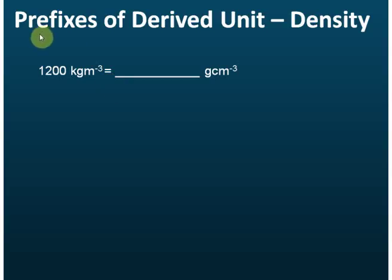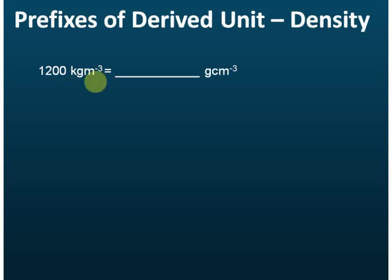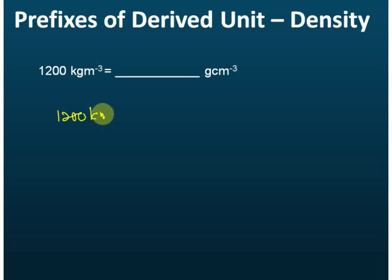Let's see another example. This time we try to convert the unit of density. The unit of density is kg per meter cubed. Since this is something per something, if you are asked to do the conversion, you are advised to write it in fraction form. So 1200 kg per meter cubed is equal to 1200 kg per one meter cubed.